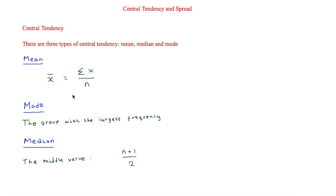The mode is the group with the largest frequency. Then the median is the middle value — the median of a set of data is the middle value, and the data has to be listed in order of size.